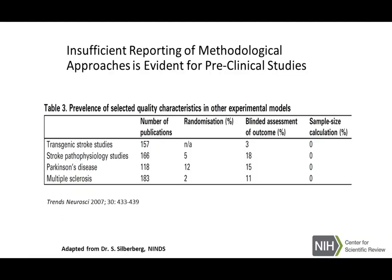Taking a look across many different studies — we've looked at 15 papers across 15 students. These results are adapted from Shai Silverberg's slide deck. He is one of the program people at NIH, and he looked at stroke studies, Parkinson's disease studies, and multiple sclerosis studies — all things that should really have randomization, blinded assessment of outcome, and certainly sample size calculation.